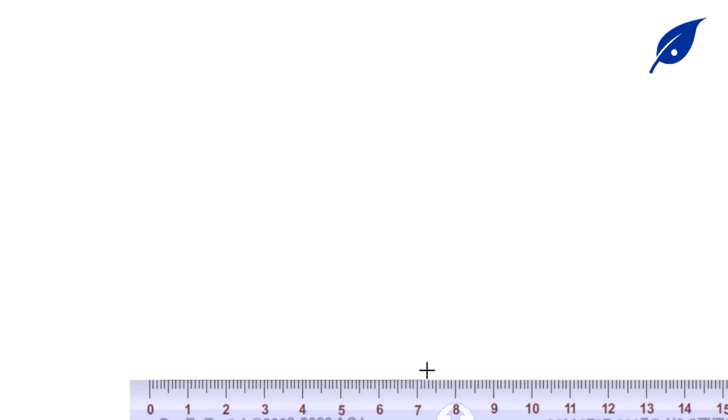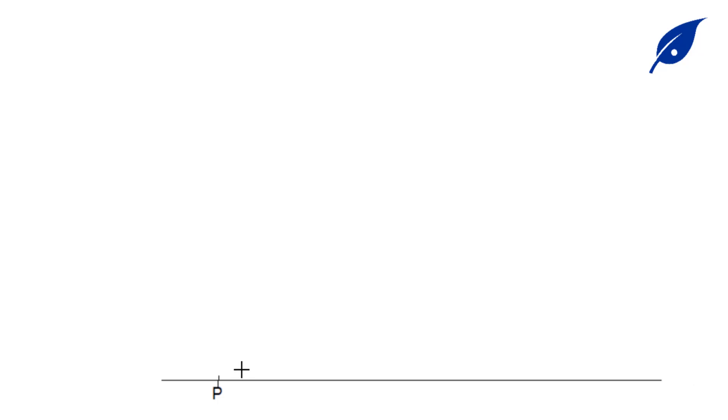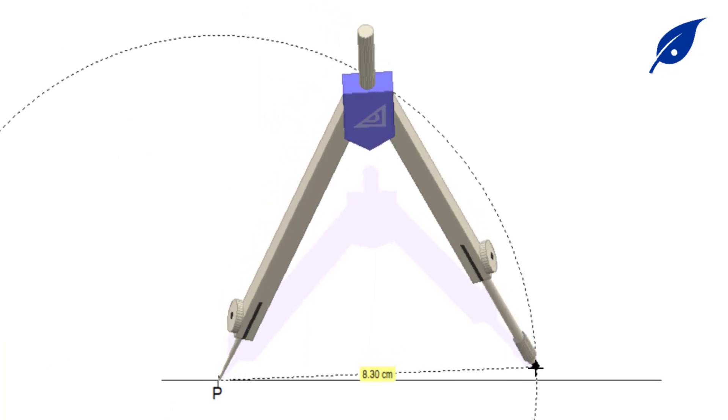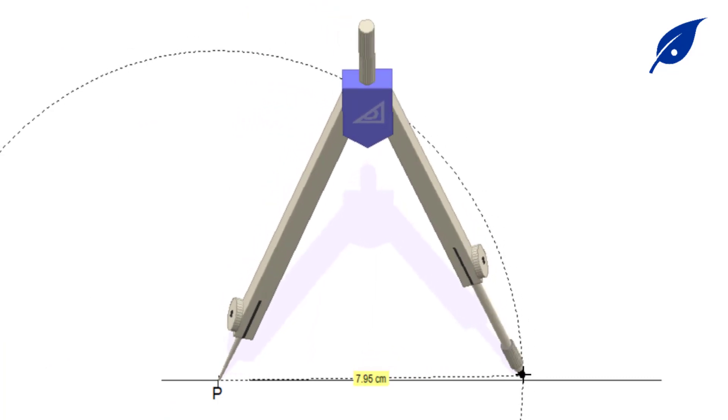The first thing is to construct the square. We draw a horizontal line and mark a point P. With the dimension of the sides of the square from point P, we mark on the line to give us S.